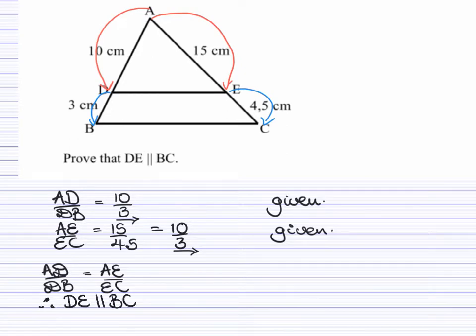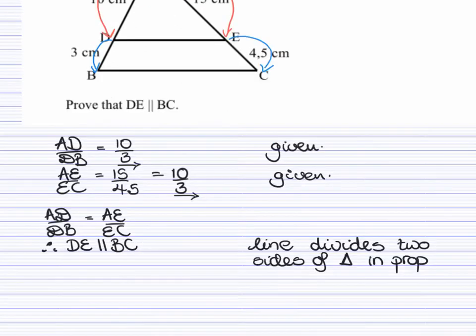You also need a reason for that, and the reason is line divides two sides of triangle in proportion. For this theorem, this is the only acceptable abbreviated reason.